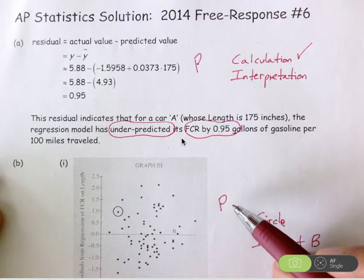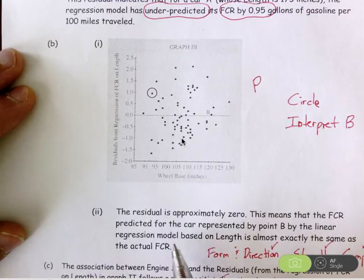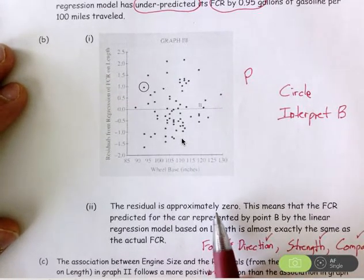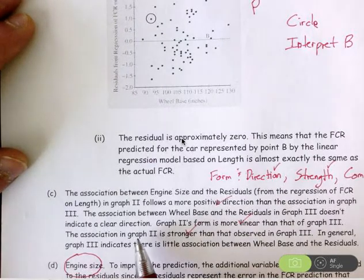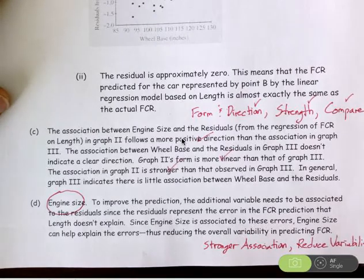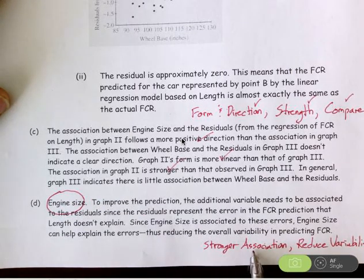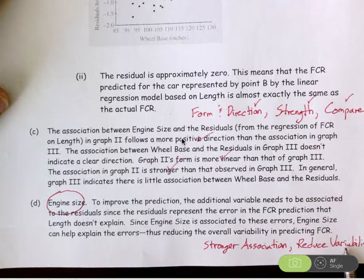To earn more points, the key is thinking in context. Do your interpretation from part A in context, talking about FCR. In part B, talk about what the residual close to zero means, interpreted in context. In part C, when you discuss direction, form, strength, and comparison, make sure you're talking about the two graphs and what those graphs represent. In part D, you must write in context, specifically choose engine size, talk about how it's more strongly associated to the residuals, and how it could reduce the variability in those residuals from the original regression. Writing in context is a really important characteristic.